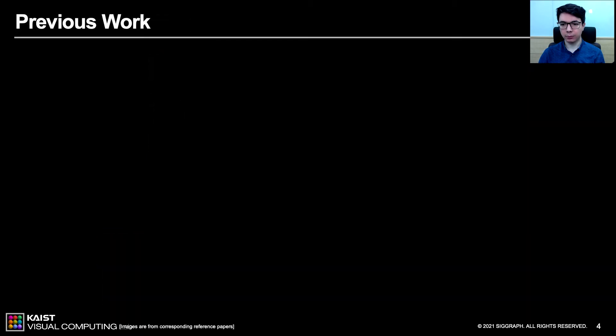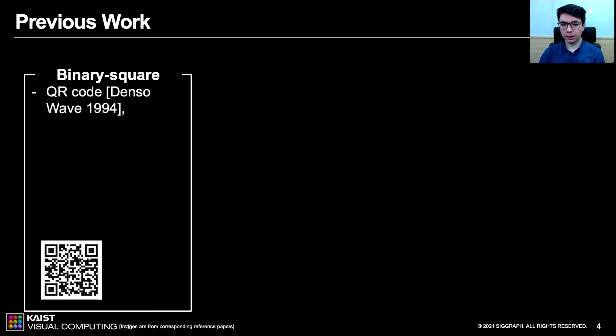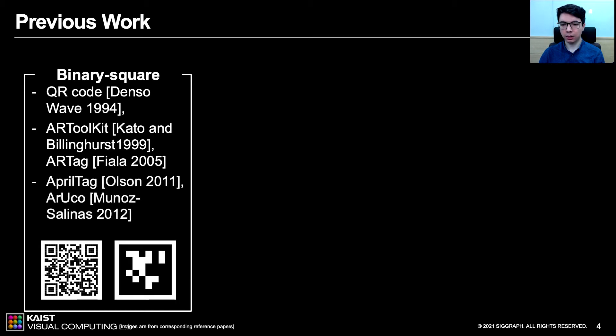Now let's talk about the previous works. We categorize them into three main categories by their patterns. First category is a group of binary and square-shaped markers. With its distinctive handcrafted shape, QR codes are the most popular example of this type. Later, ARToolkit and ARTags were introduced for better recognition performance. And their successors, AprilTag and Aruco, are the most recent systems, which are commonly used in robotics applications.